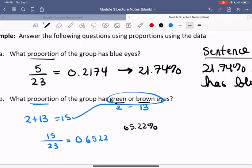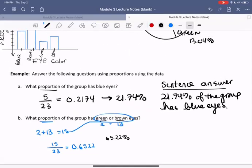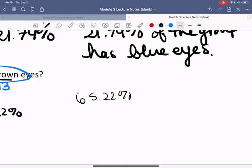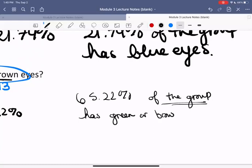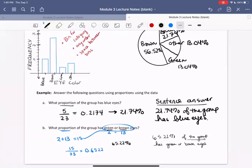So now I want you to try writing a sentence using that answer. All right, so we can check together. So a sentence would look like 65.22% of the group, since the group is our whole, that we're determining what the percentage of that is in these two categories. So 65.22% of the group has green or brown eyes. All right, awesome work. Thanks for listening.